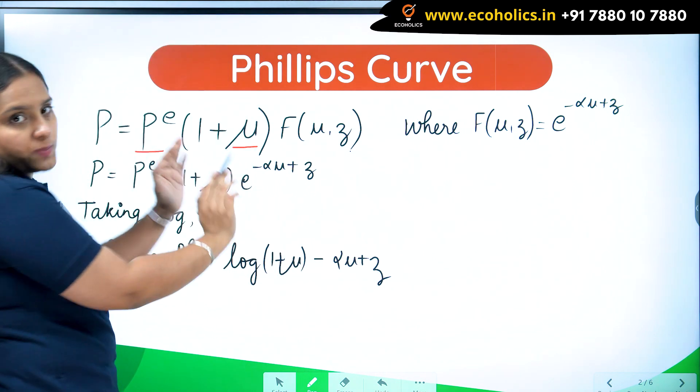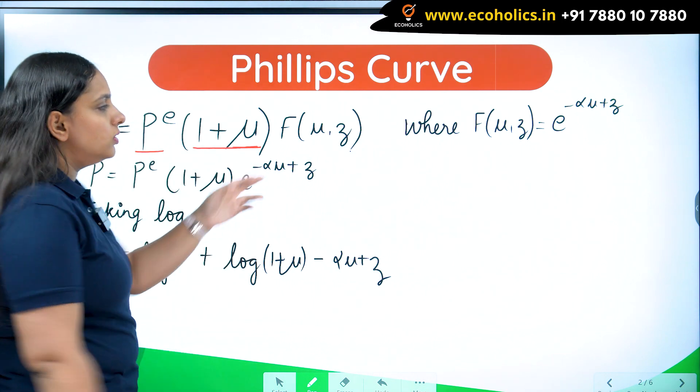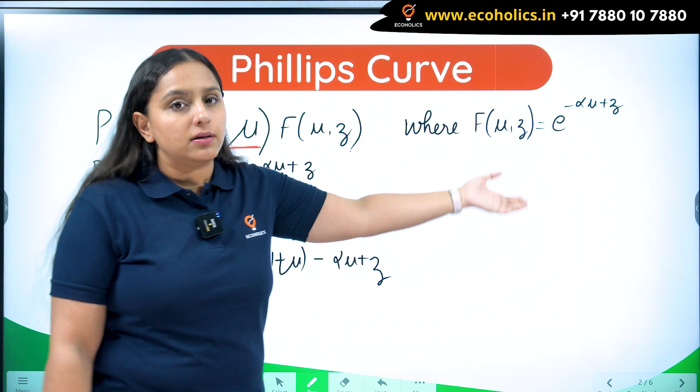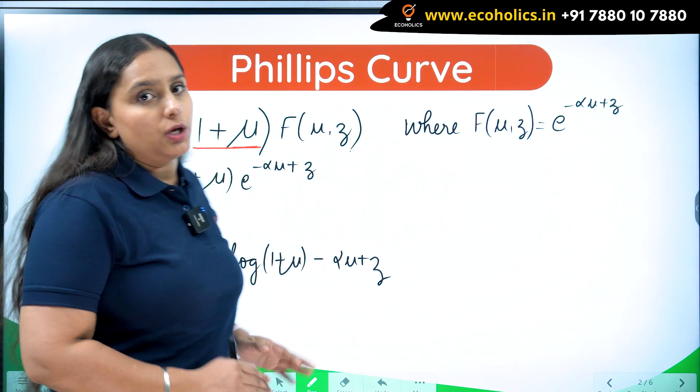This is expected prices. Over and above the expected prices, there is going to be a markup, 1 plus mu.